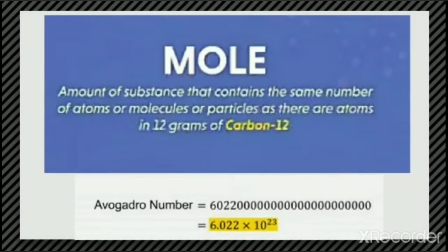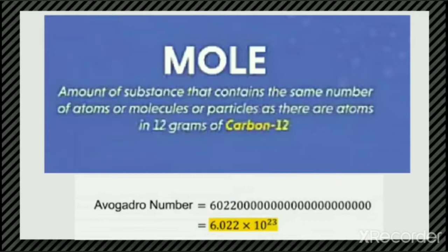So how do we define a mole? A mole is the amount of a substance that contains the same number of atoms, molecules, or particles as there are atoms in 12 grams of C-12. That means the C-12 isotope is taken as standard. In 12 grams of the C-12 isotope, the number of particles present is considered to be one mole, which we have found to be equal to 6.022 × 10²³. Since this number is quite large, we use scientific notation to express it.